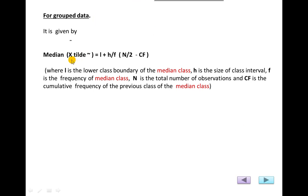For grouped data, the median formula is: Median = L + (H/F) × (N/2 − CF), where L is the lower class boundary of the median class, H is the size of the class interval (which is 10 in the first example), F is the frequency of the median class, and CF is the cumulative frequency of the class previous to the median class. The most important step is finding the median class first.